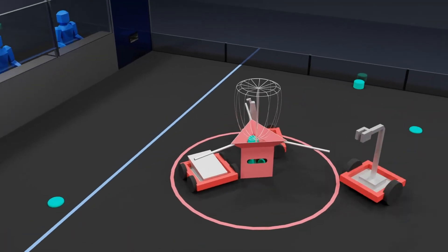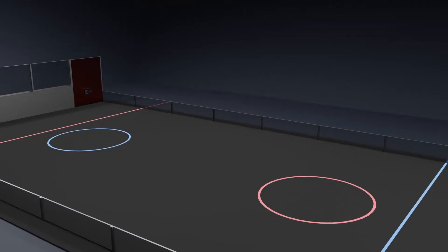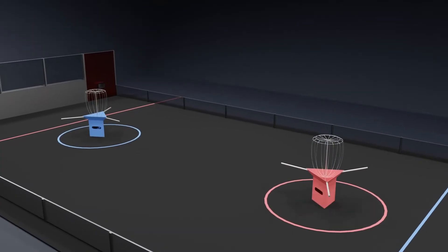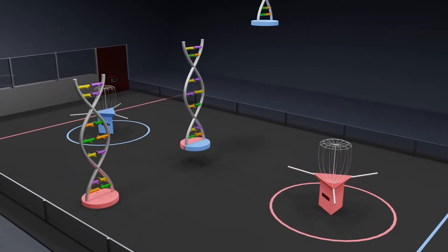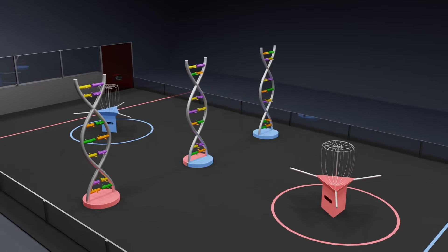Points can also be gained by climbing the poles, called the binding sites. Each alliance has one ribosome on the opposite side of the field, one DNA helix at the center line, and one shared DNA helix at the middle of the field.